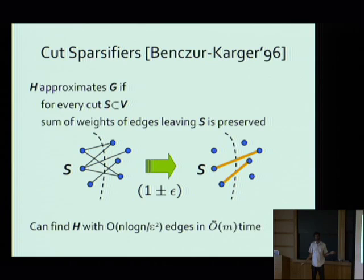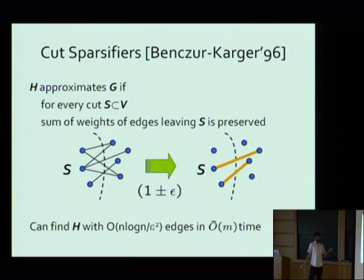Benzer and Karger showed that for any graph G, you can find H with n log n over epsilon-squared edges which preserves all cuts up to a factor of 1 plus or minus epsilon, and you can do this by random sampling in nearly linear time in the number of edges in G. This was used to speed up algorithms for all kinds of cut optimization problems like sparse cut, min cut — basically anything where you care about cuts. The sampling is according to a quantity called strong connectivity, which is related to the connectivity of an edge — the size of the smallest cut that disconnects its endpoints.